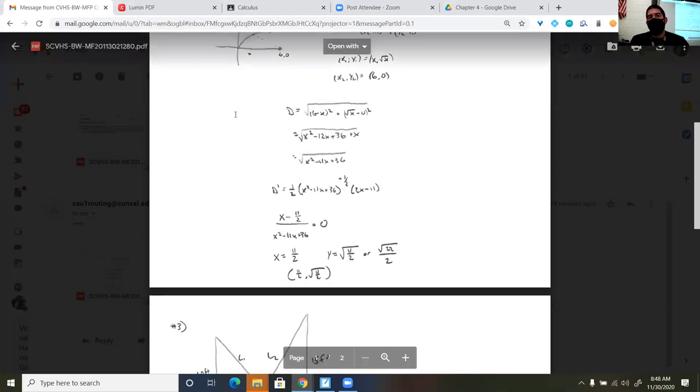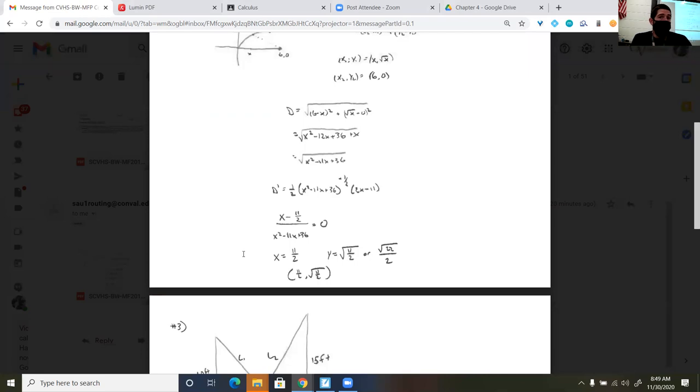And then the coordinate point would be 11 halves and the square root of 11 halves. Now going back to the context of the problem, this x value is way to the left. And in reality, it appears to be at 5 and a half. So the shortest distance from the 0.60 to the curve of the square root of x would be found at 5 and a half on the x-axis and the square root of 22 over 2 on the y.